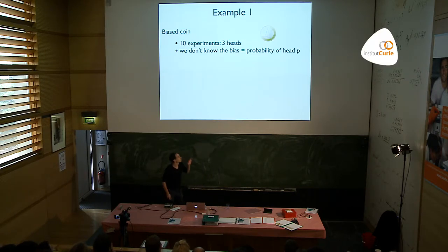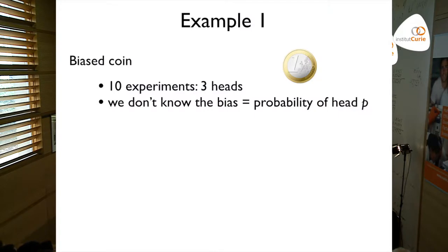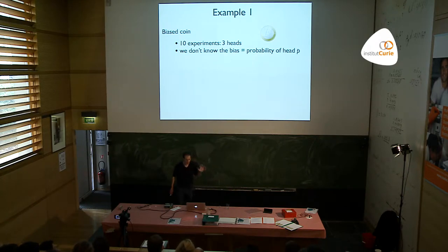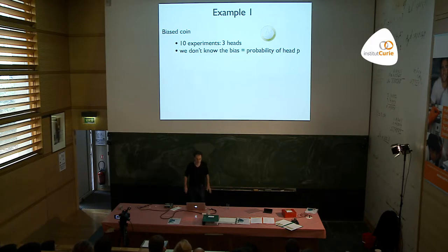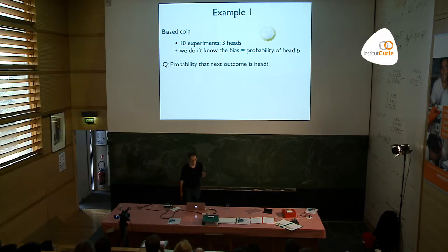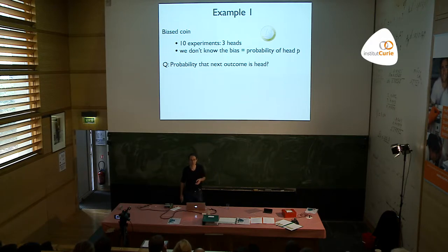Let me give a very concrete example. Imagine that you have a biased coin and you don't know its bias — it will give you heads and tails, but not with probability one-half. It will give heads with some probability p, which could be anything between zero and one, and you don't know it. Now you do ten experiments and out of that you get three heads. The question is: what's your estimate of what p could be?